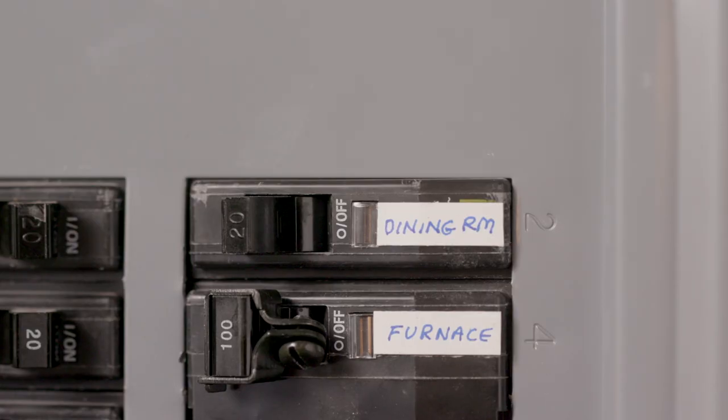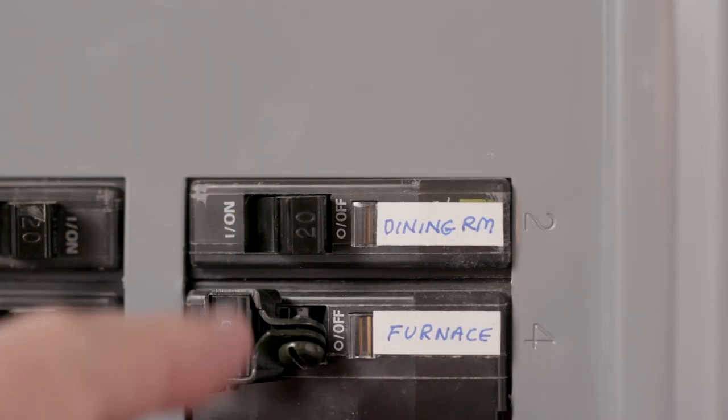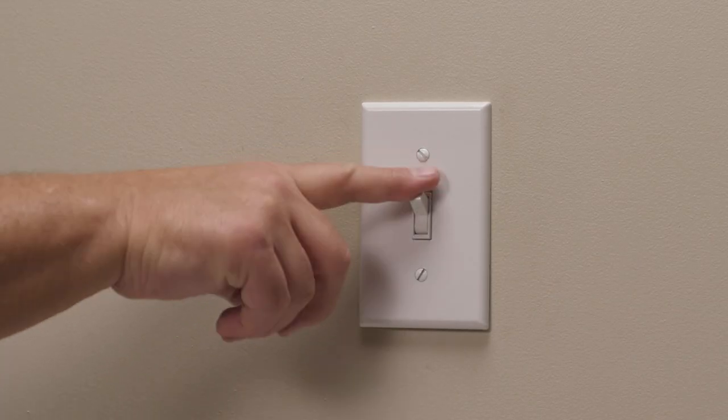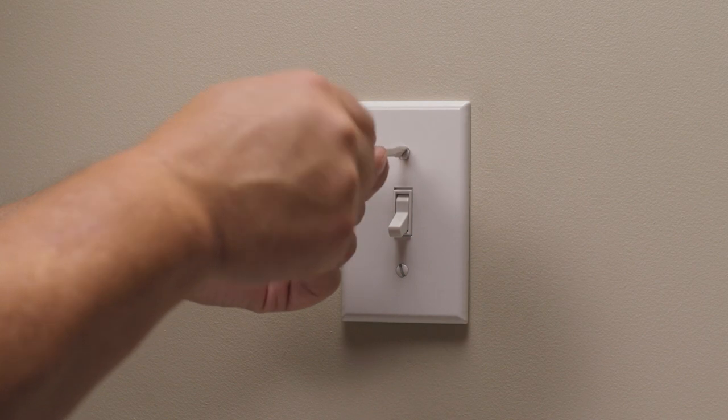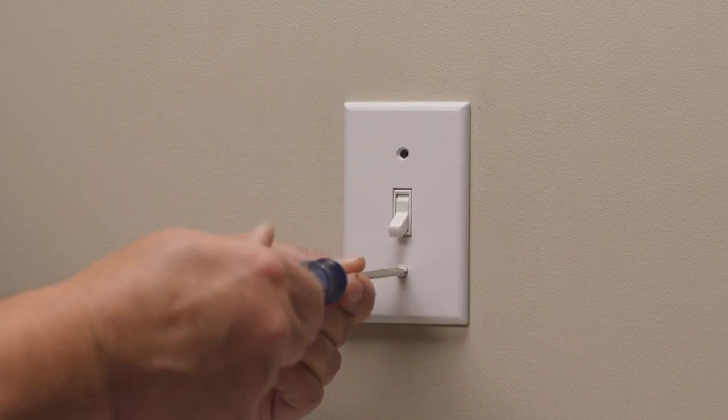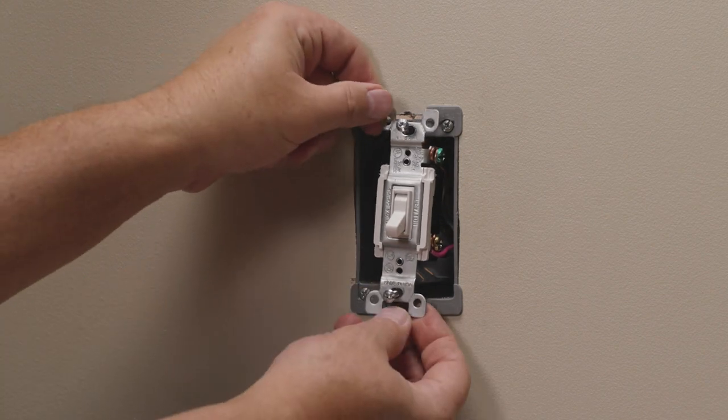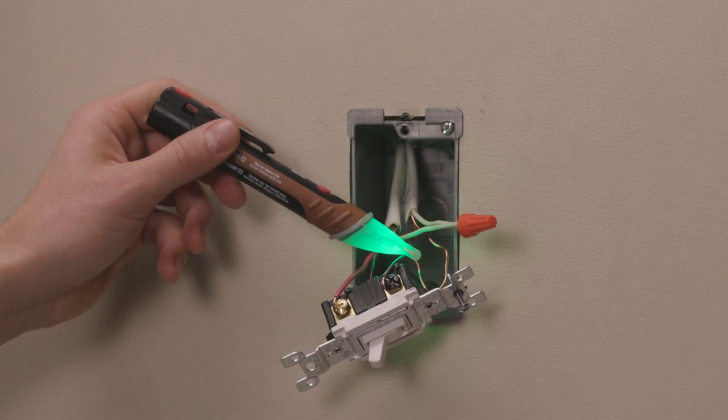Be sure to turn off the power for your existing device at the circuit breaker. Flip each of the three-way switches multiple times to confirm the power is off. Unscrew the existing wall plate of the three-way switch you want to replace with the smart switch. Use your voltage tester to be sure everything is safe and there's no power.